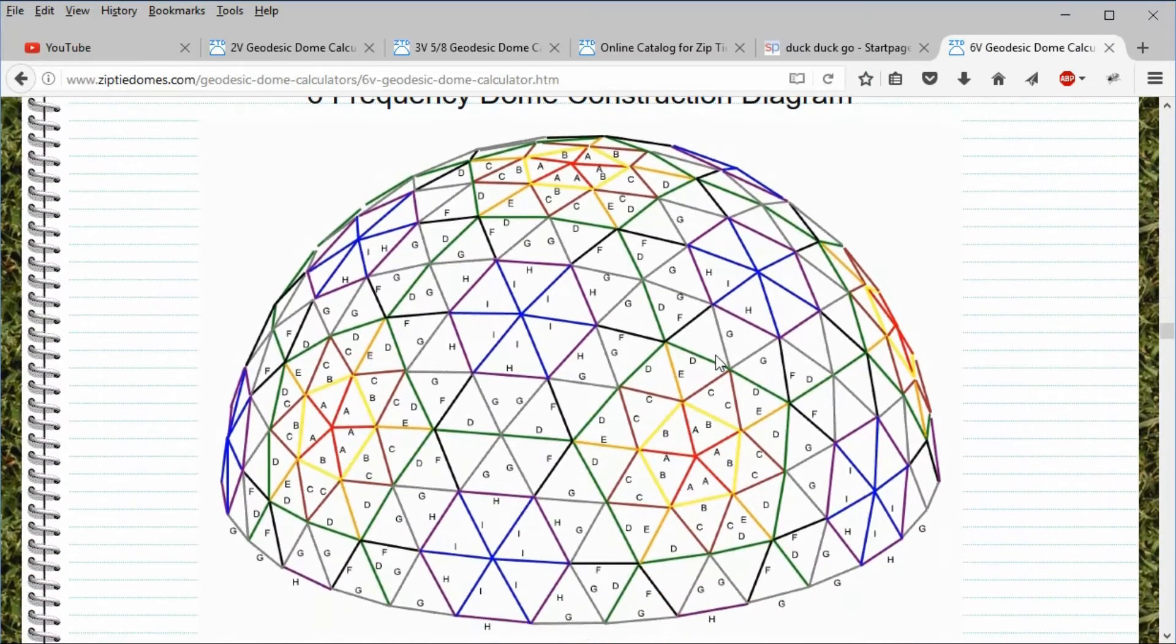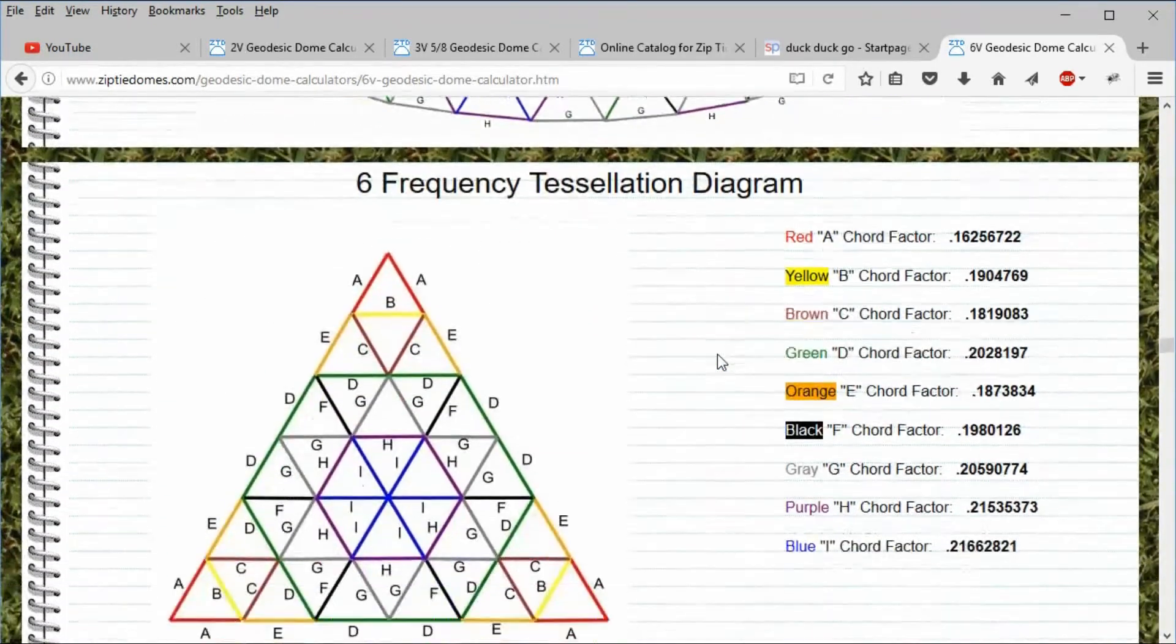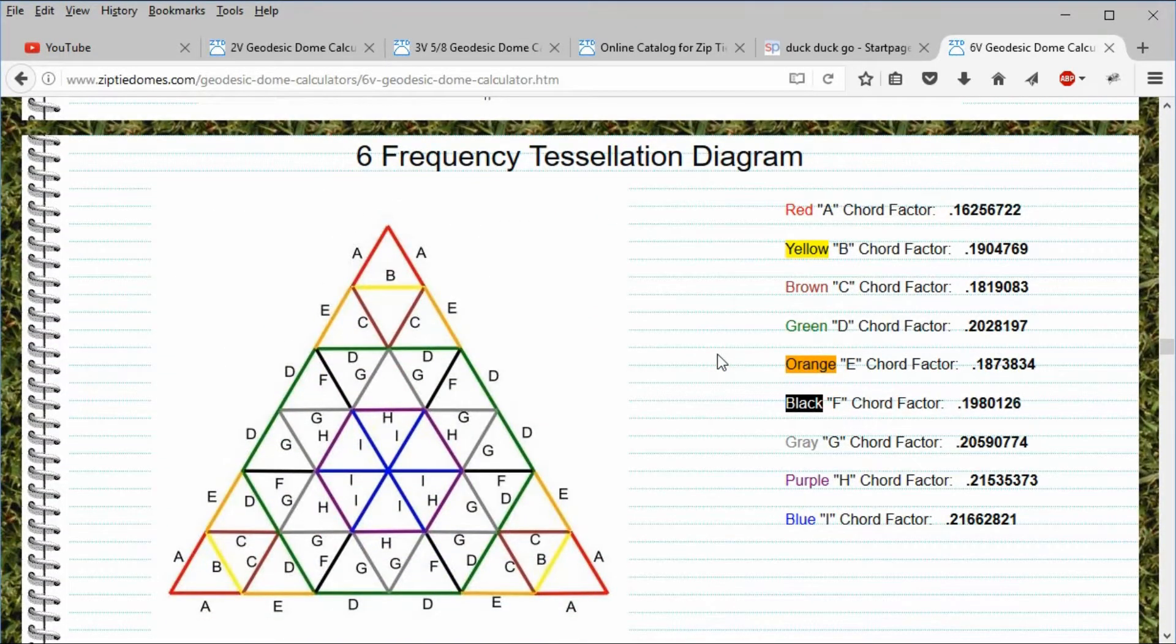The 6 frequency dome has 9 different strut lengths, so this dome is very complicated to build. Just below the construction diagram is the tessellation diagram, which is how the 6 frequency dome is broken up into smaller triangles from the original face of the icosahedron.